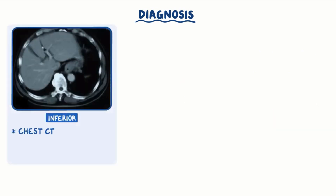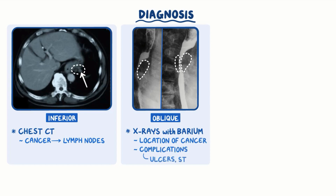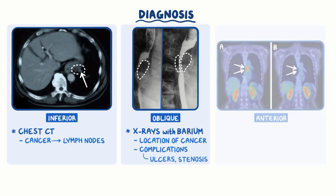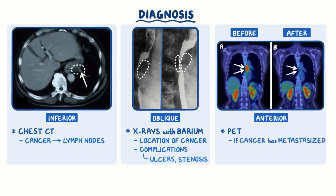Chest CT can be used to evaluate if the cancer has spread to nearby lymph nodes. X-rays with barium contrast of the upper GI tract can be useful to identify the location of the cancer and complications like ulcers or esophageal stenosis. A positron emission tomography, or PET, is useful to see if the cancer has metastasized and to evaluate the response to chemotherapy.